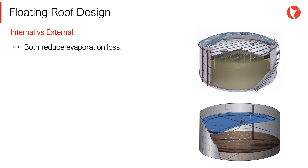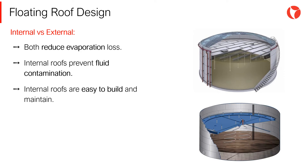Both the internal and external floating roofs can reduce evaporation losses. Internal floating roofs can effectively prevent the stored product from being contaminated by wind, sand, rain, snow, or dust. Tanks with internal floating roofs are easy to build and maintain. In addition, materials of the sealed element have longer duration because they are not in direct contact with solar radiation.